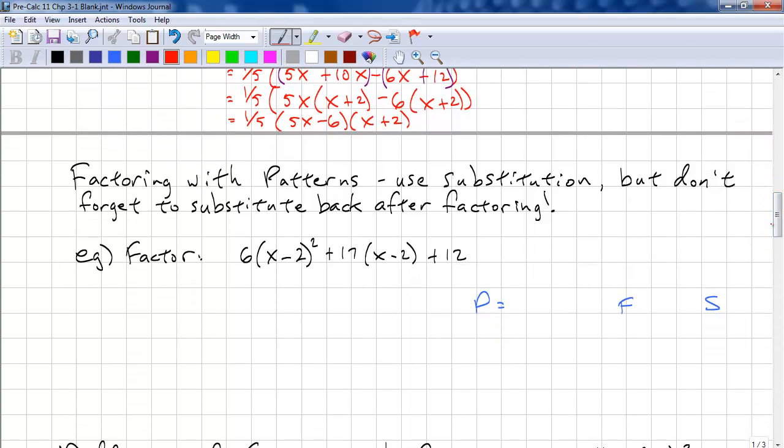Now, if we get something complicated, we can factor with patterns by using substitution. But, remember to substitute back after you do the factoring. Otherwise, your answer is incomplete. We don't want to factor with x - 2, so let's replace x - 2 with y. So y = x - 2. Now we just have 6y² + 17y + 12. This looks a little easier to factor.